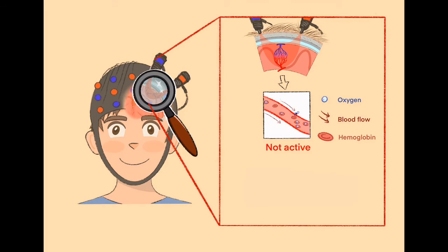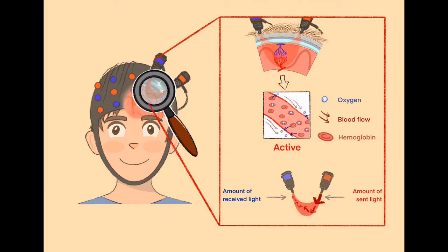This change in oxygenated hemoglobin is what you can see with fNIRS. This is because oxygenated hemoglobin swallows or absorbs some of the light. When there is more of it, more light is swallowed on its journey through the head.